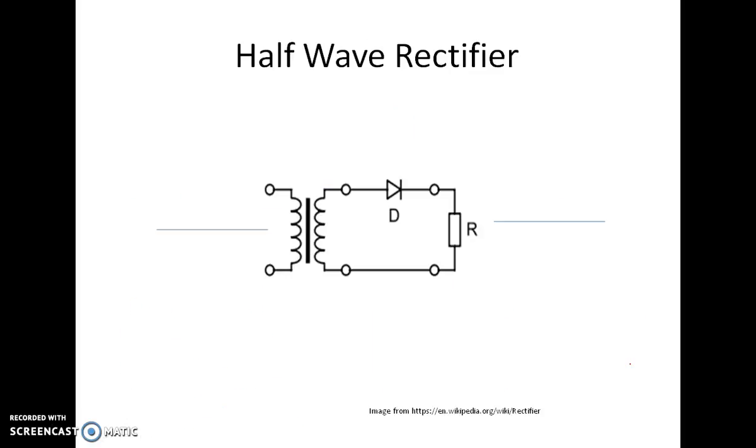Let's start with the half-wave rectifier. Only one diode is present. So here we have the transformer, the diode and the resistor as the load.